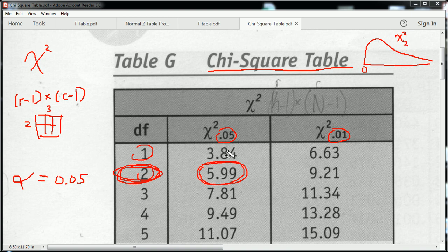So the chi-square distribution, just a quick kind of background, is a whole family of distributions. A particular member of the chi-square family is specified by knowing what its degrees of freedom are. So degrees of freedom is its parameter. It's got one parameter. So for us, we had 2 degrees of freedom, so we're dealing with this particular member of the chi-square family.